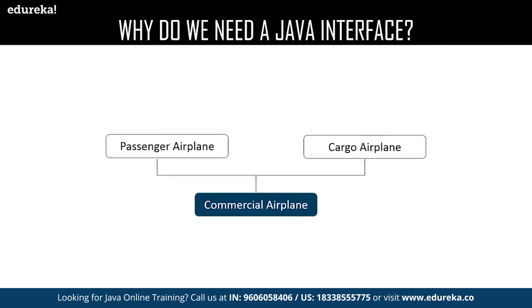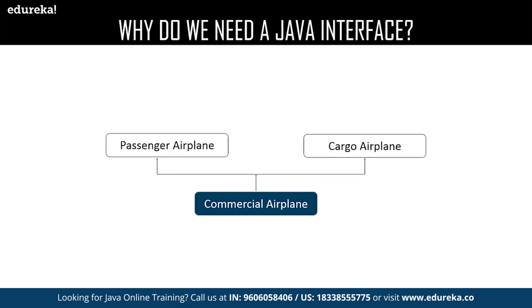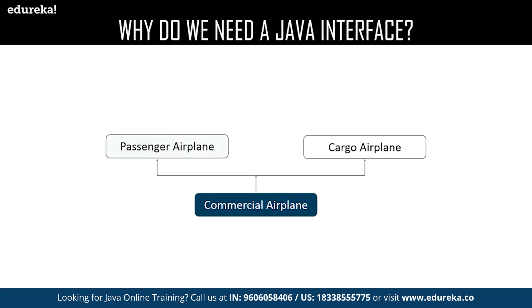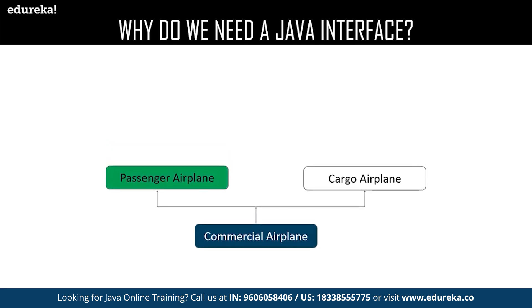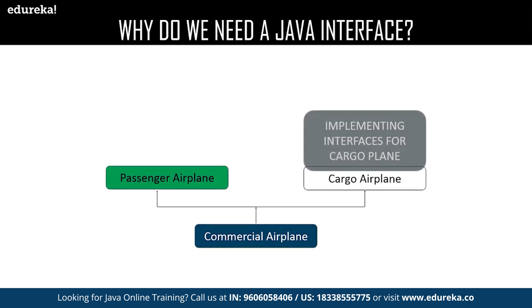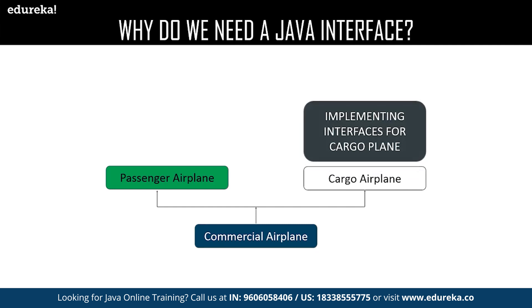But you can make it possible by making Java feel that it is inheriting one plane and implementing the methods present in the other one. It is like building a commercial plane which takes both passengers and cargo. Interface is like making a bigger plane which could do both tasks without interfering with the components of one another, just borrowing the methods present in the interface class.